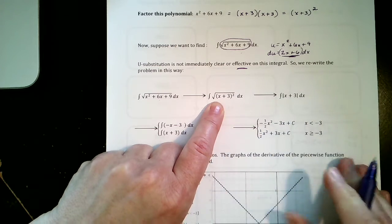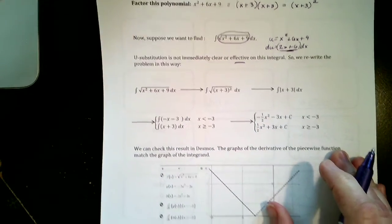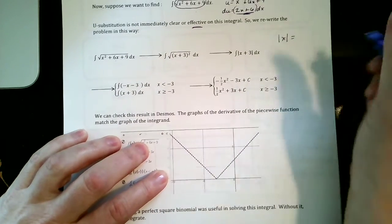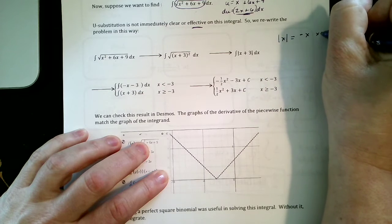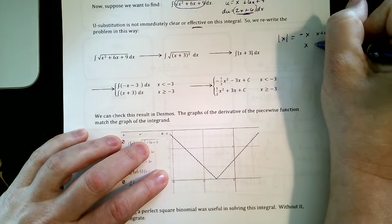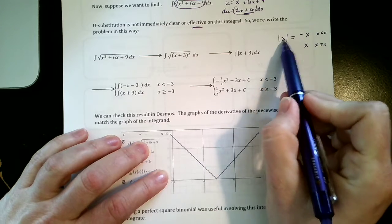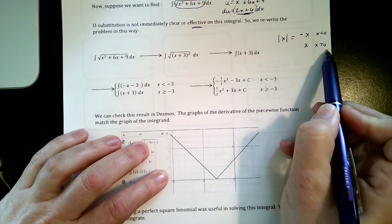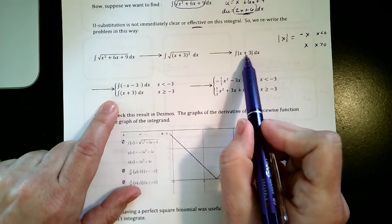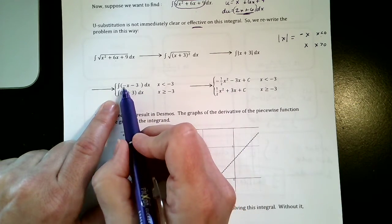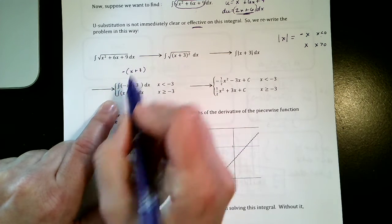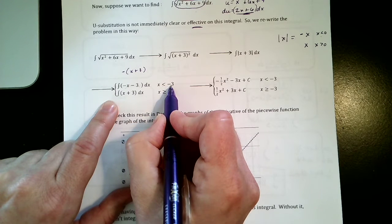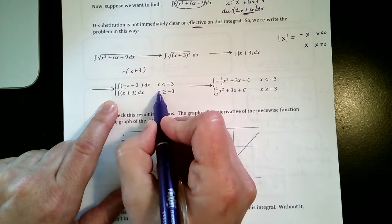The absolute value of x is equal to -x if x is less than 0 and is equal to positive x if x is greater than 0. We're going to split this up into a piecewise function: -(x + 3), which if you distribute the negative you get -x - 3 for x values less than -3, and positive x + 3 for x values greater than or equal to -3.